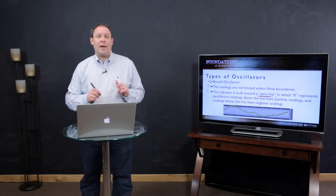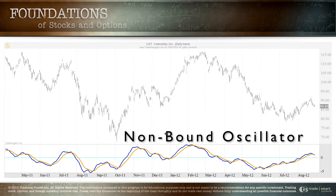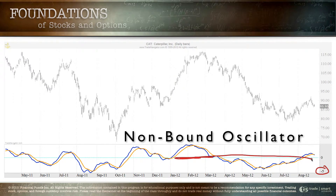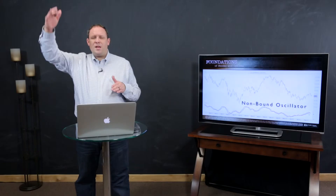One example of an unbound oscillator we'll look at in this lesson is the MACD. Looking at this picture, you can notice that with the MACD sometimes readings just keep going higher and higher, and the same can happen for lower readings — there are really no boundaries. Here it's gone as low as negative five and as high as positive five or beyond, all centered around that zero line running through the middle. In an unbound oscillator it oscillates as far as it wants, with zero representing equilibrium.